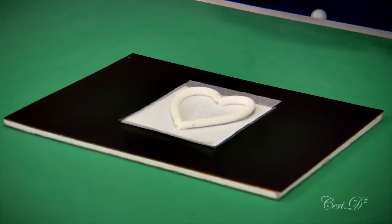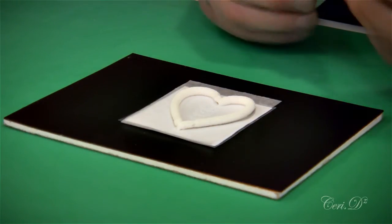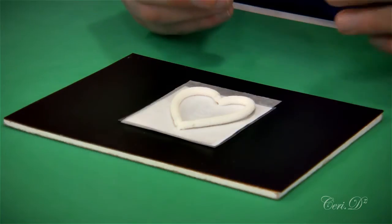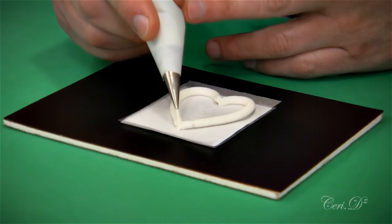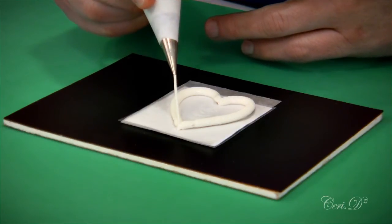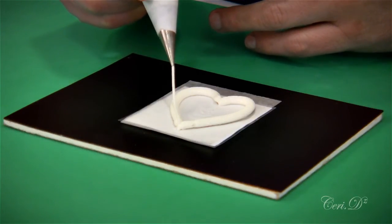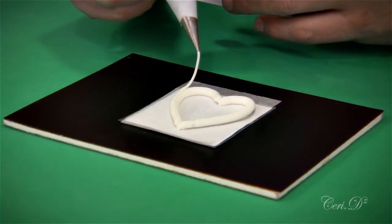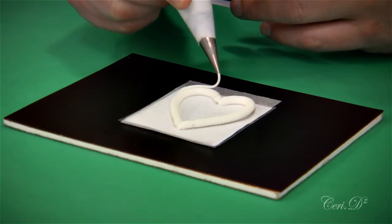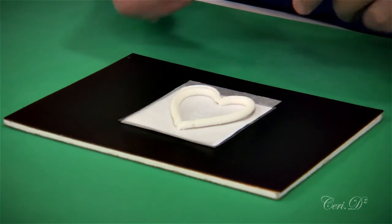Now when you have this in this position, take a number two nozzle. That's a PME number two, also a Wilton number two, and over-pipe a thinner line. This will give your heart a bit more definition. If you want to add more color to this design or use this technique for another cake, you could add color at this point to that line.